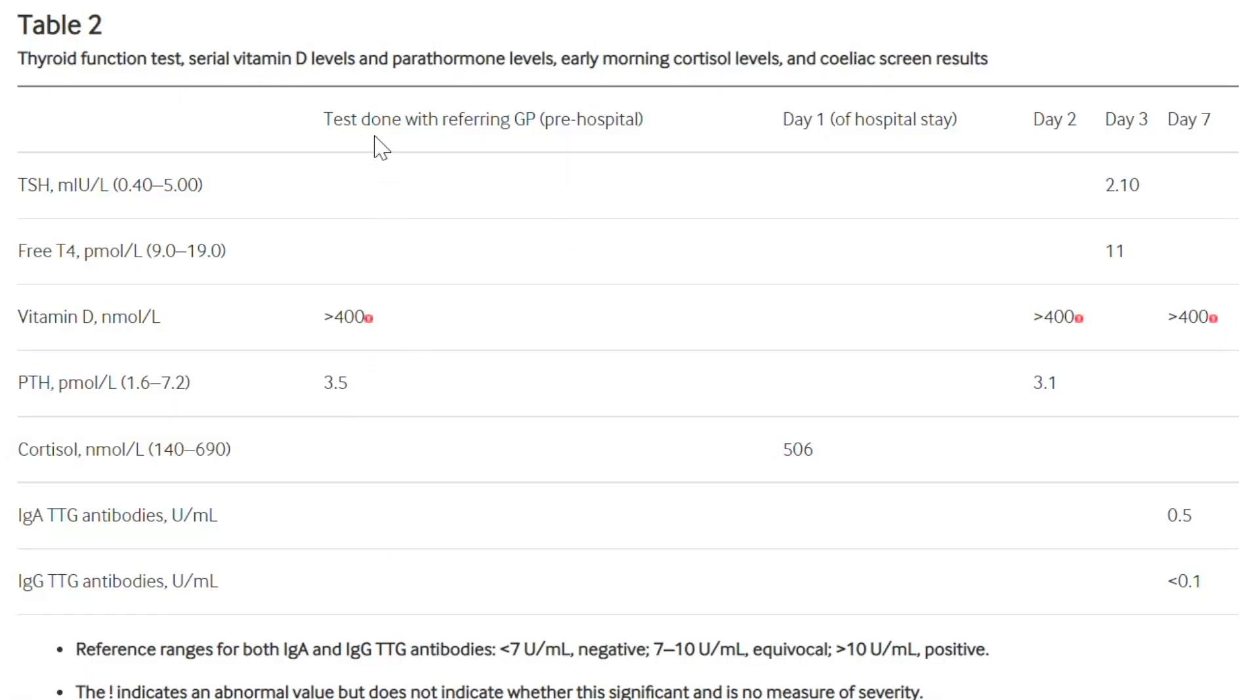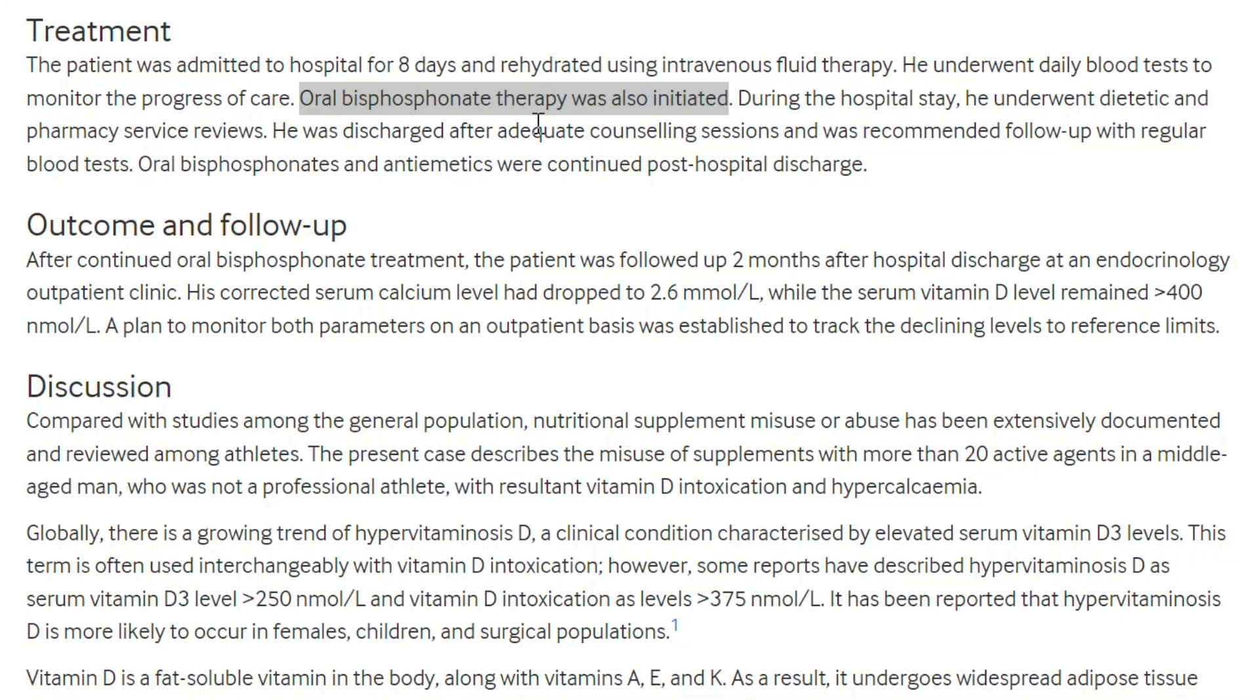In table two, you can see when they tested vitamin D levels in nanomoles per liter, it was greater than 400. They tested it again on day two, probably because they didn't believe it. Sure enough, it was elevated. Even by day seven, it was still elevated. This illustrates what I was talking about before. You can give IV fluids to these people, but the problem is this is a fat-soluble vitamin. It's not going to wash out. It's going to stick around for a long time. Notice also they gave oral bisphosphonate therapy. This is a medication used to take calcium in the blood and put it into the bones, a great way of reducing calcium concentration quickly when it's that high.